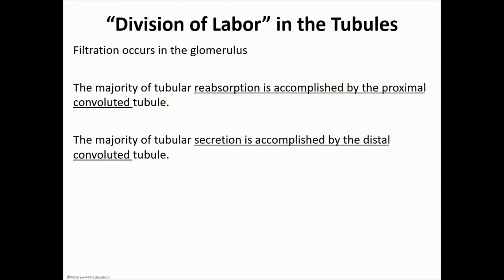Each part of the tubule has its own function — the division of labor. Filtration happens in the glomerulus. The proximal convoluted tubule is mainly where tubular reabsorption occurs, while the distal convoluted tubule is mainly where tubular secretion happens. By far, the most reabsorption happens in the proximal tubules, while most secretion happens in the distal tubules.